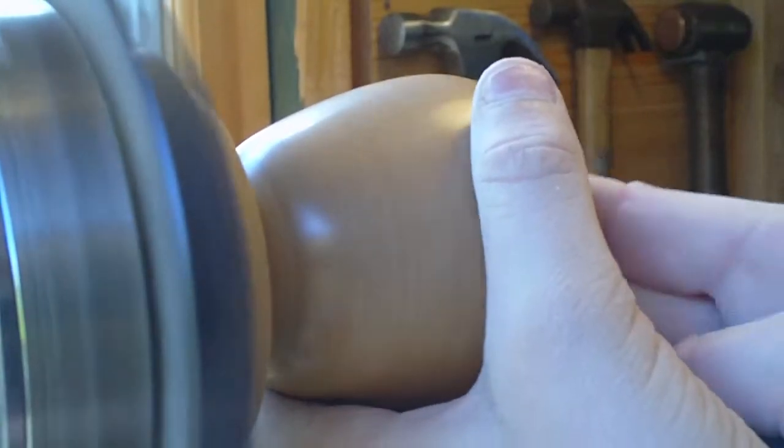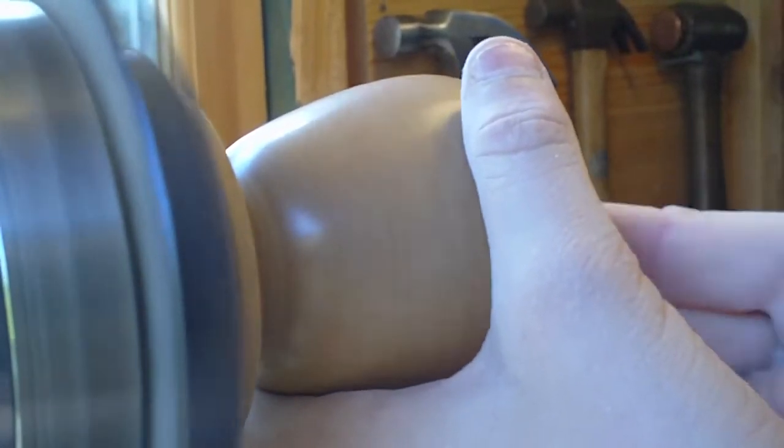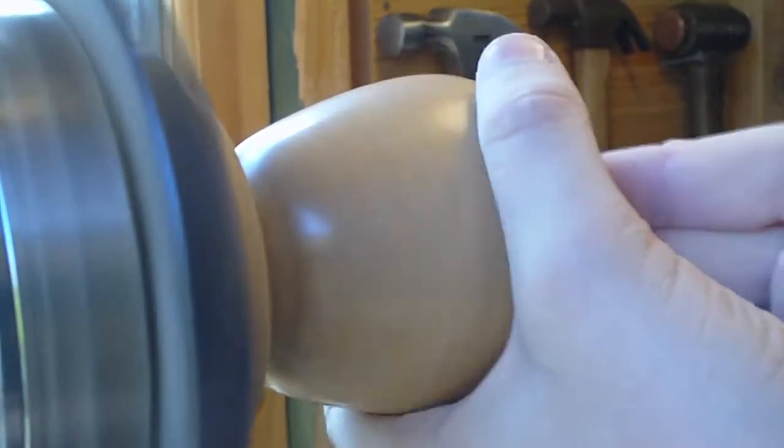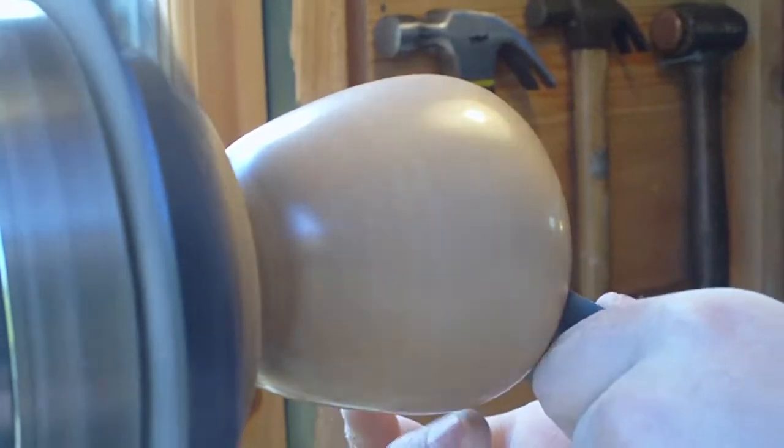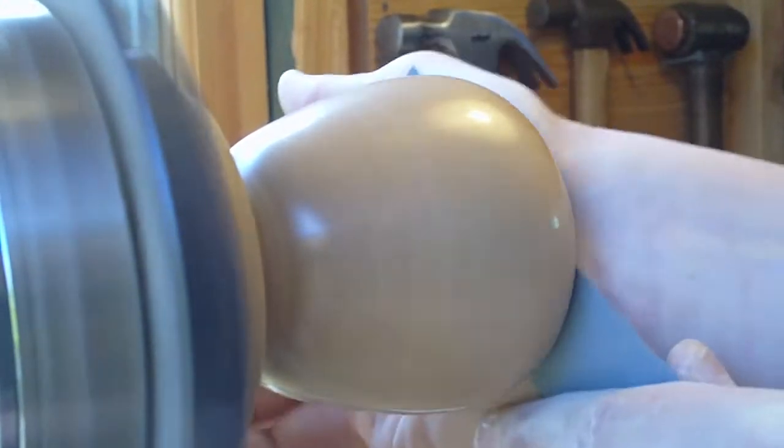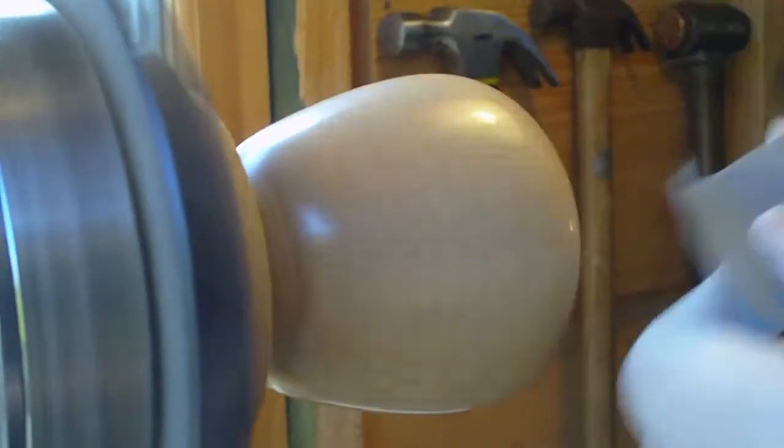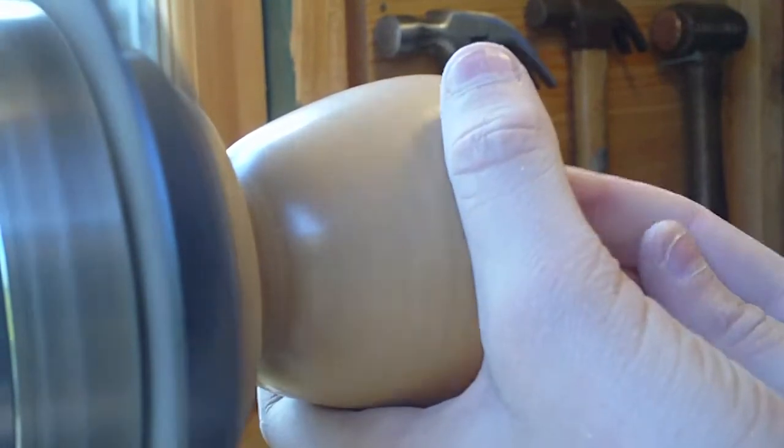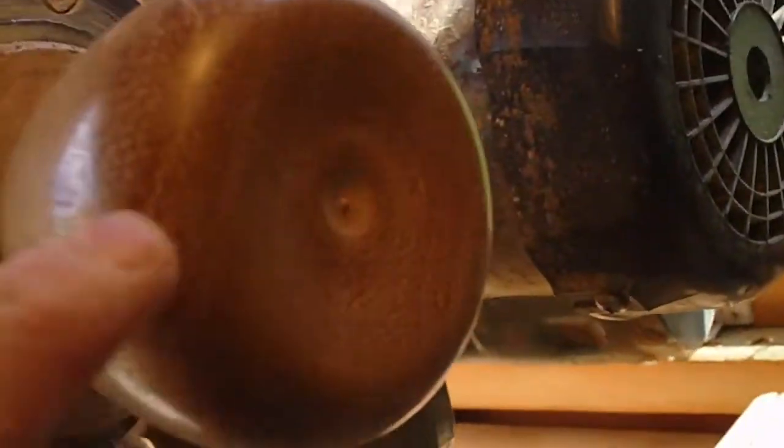Now you can really start to see the glass finish when you get above 1,000, 1,500 grit. You can really start to see the shine coming out. And it's really nice. So this is 2,500 grit. I still want to need to do the 3,000, but you can already see it's got a lovely shine to it.